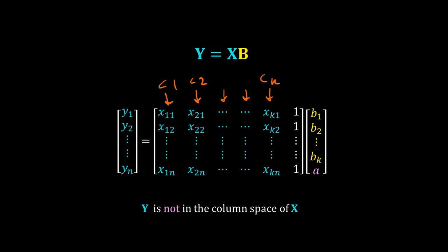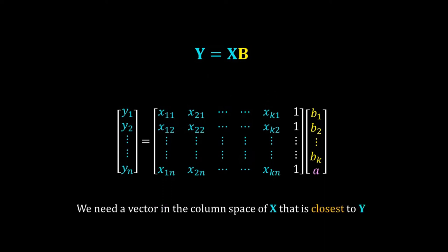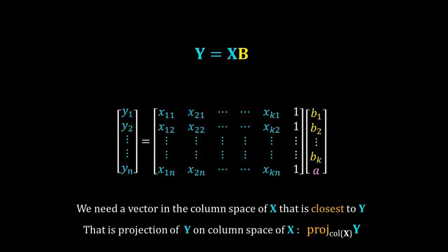The k columns define the column space of X. To do the regression, or to fit the linear equation to the data, we have to find a vector in the column space of X that is closest to y. That is simple, because the projection of y onto the column space of X satisfies our needs — that projection would be in the column space of X and also would be closest to y.